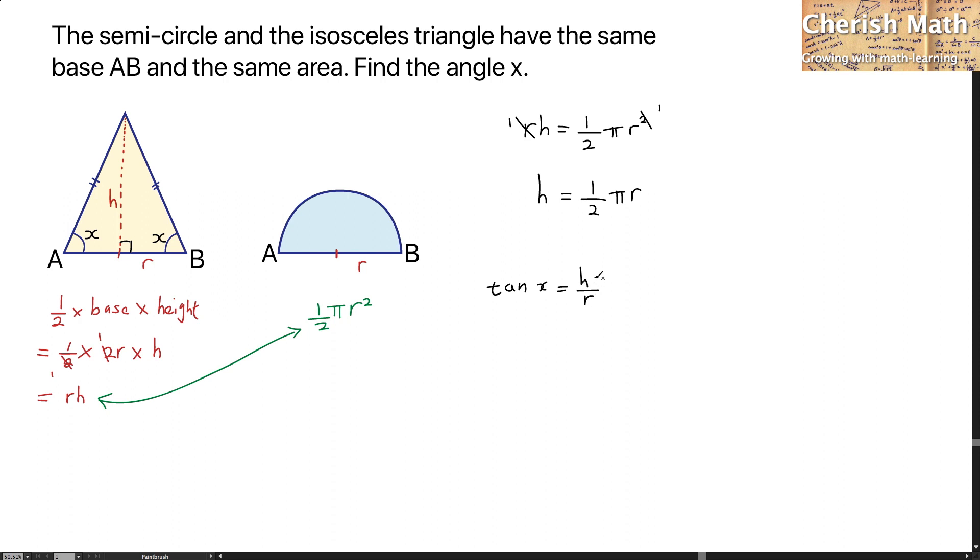I have to substitute the value of H using what I got earlier. The value of tan X by substituting the value of H would be one-half πR divided by R. I will be simplifying this part, and the value of X is the inverse tangent of one-half π.